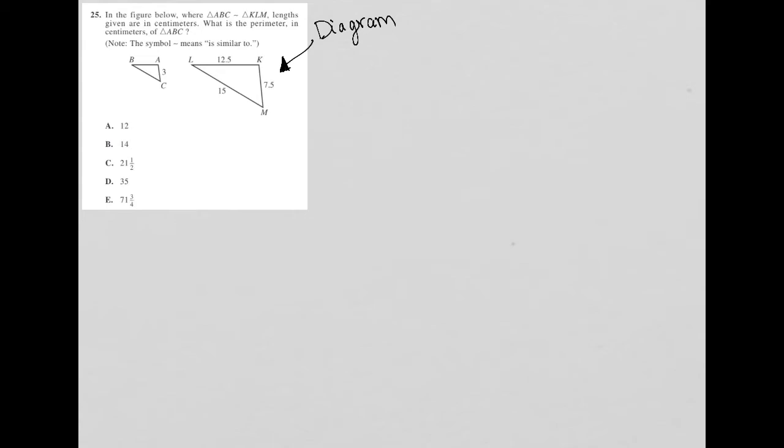So let's read the question and see what else we can figure out. The question says, in the figure below, triangle ABC is similar to triangle KLM. So that's a lot of information in and of itself, because in order for these two triangles to be similar, that means that the corresponding side lengths must be proportional. And I can always use that fact in order to find missing side lengths.